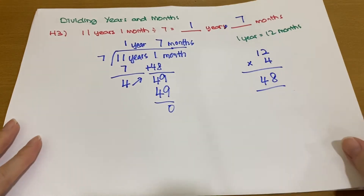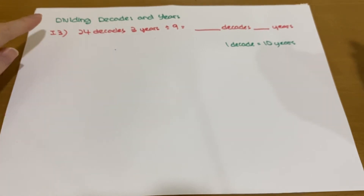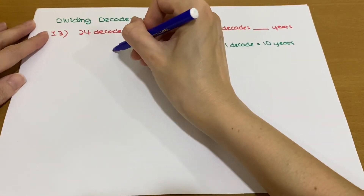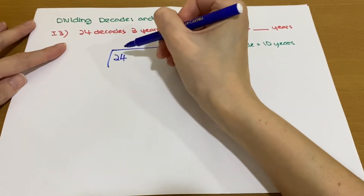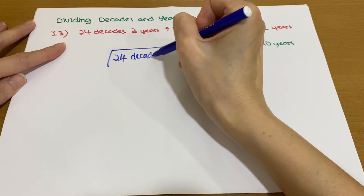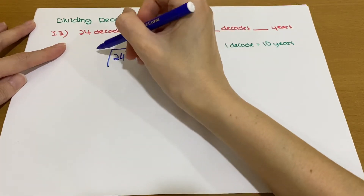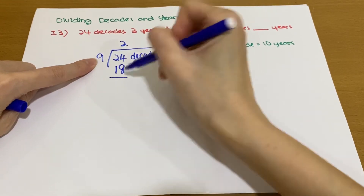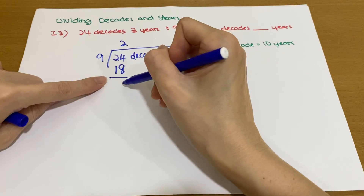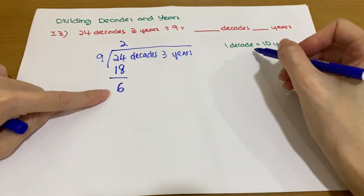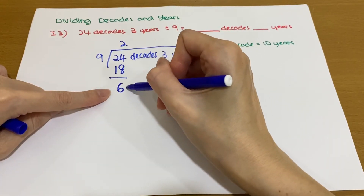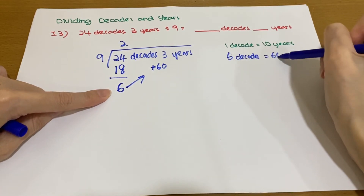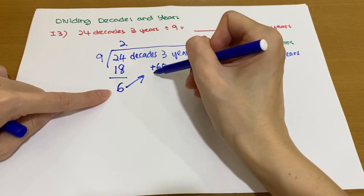Next we will do dividing decades and years. We have 24 decades 3 years divided by 9. Using long division: 2 × 9 = 18; 24 minus 18 gives balance 6. We know 1 decade equals 10 years, so 6 decades equals 60 years. 3 years plus 60 gives us 63 years.